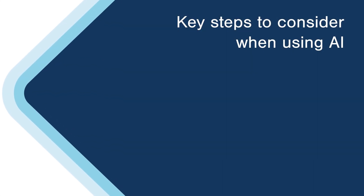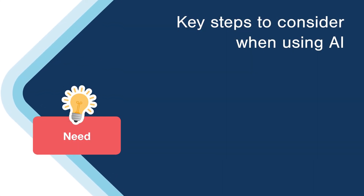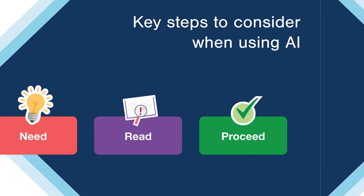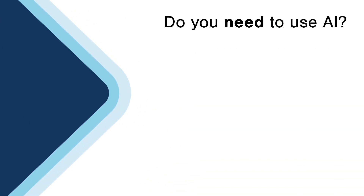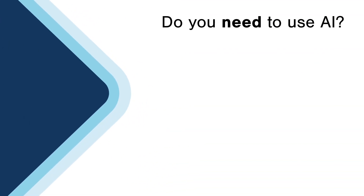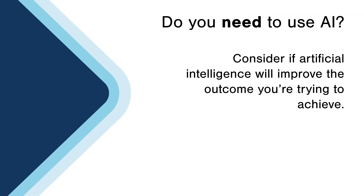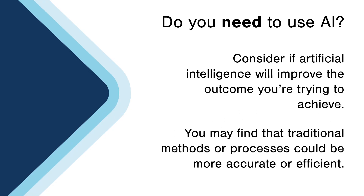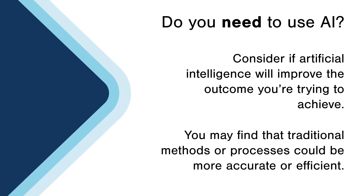Now let's move on to the key steps to consider when using AI: need, read, proceed. First, ask yourself: do you need to use AI? You should consider whether artificial intelligence will improve the outcome you're trying to achieve, as you may find that traditional methods or processes could be more accurate or efficient.